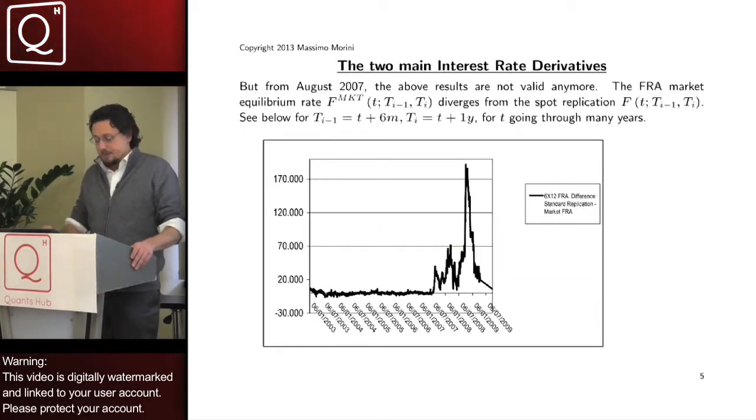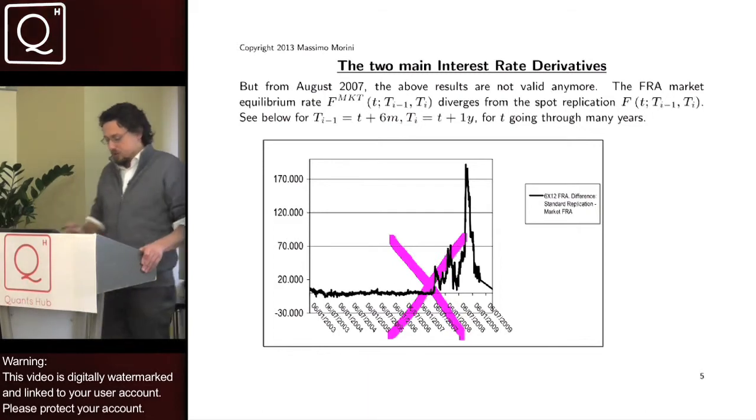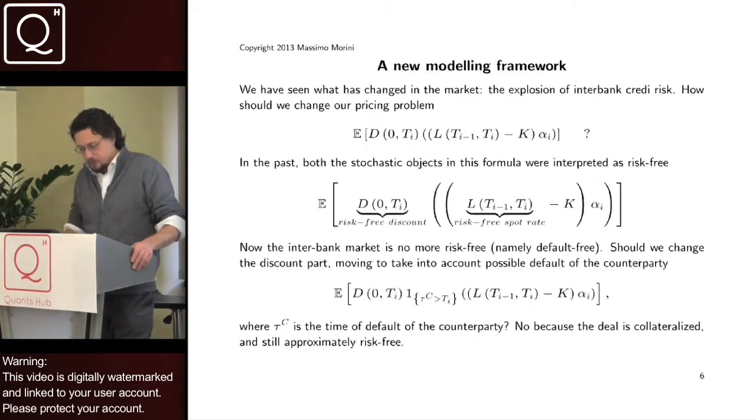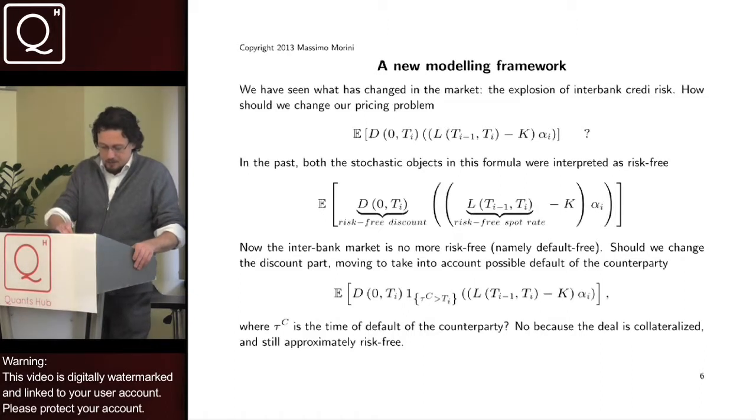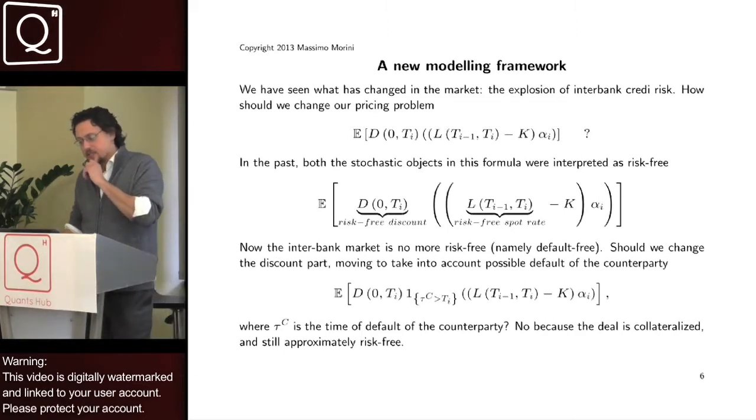But we know that the replication is no more valid from 9th of August. So, what can we do essentially? For understanding what we can do to go on modeling, it's important to understand what has really changed in our pricing problem.